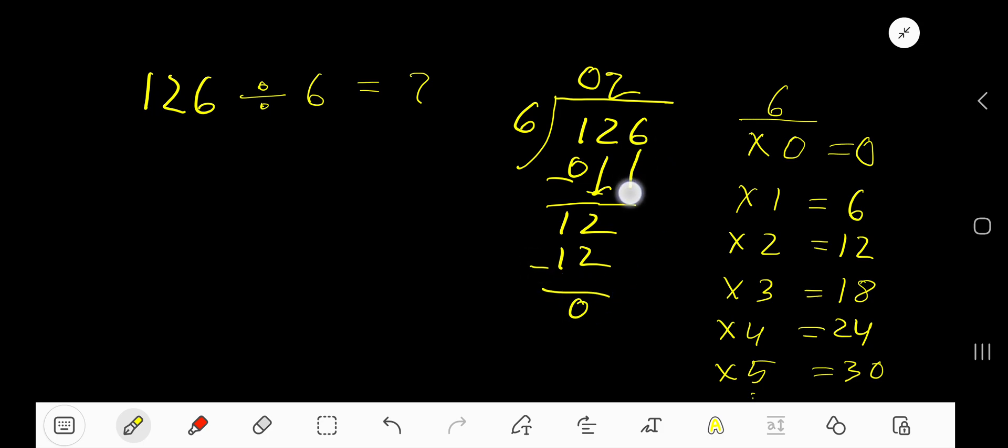6 goes into 6, 1 time. So 1 times 6 is 6. Subtract to get 0. So our answer is 021, that is 21.